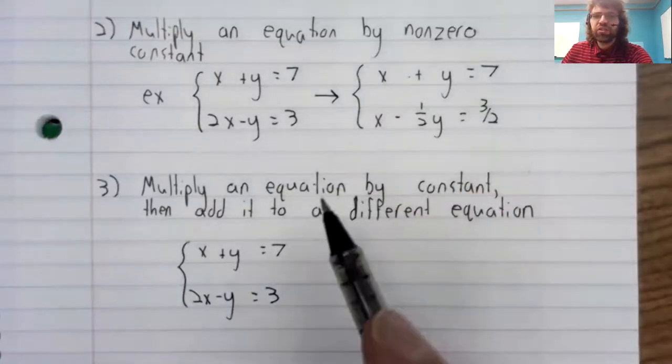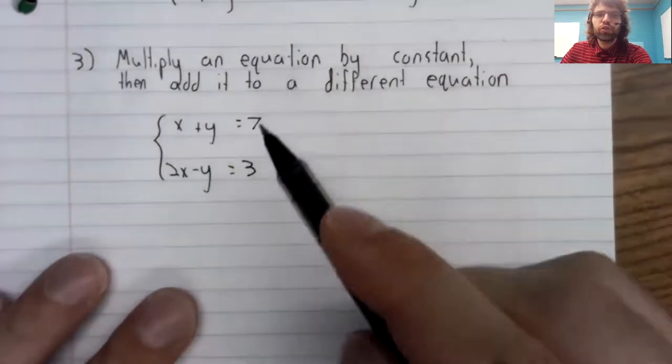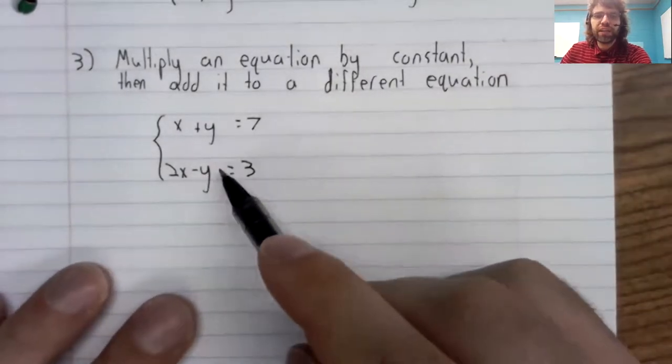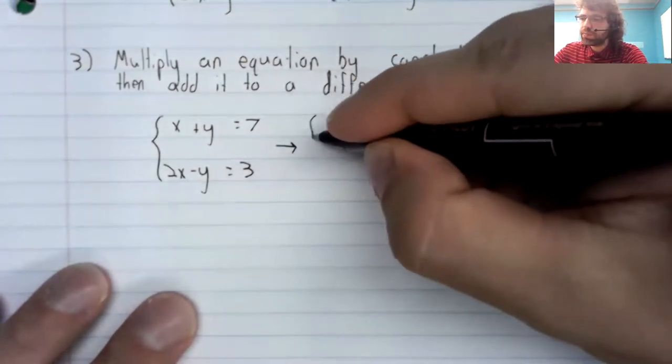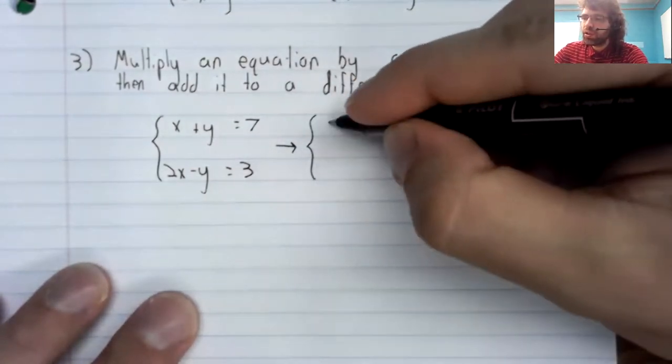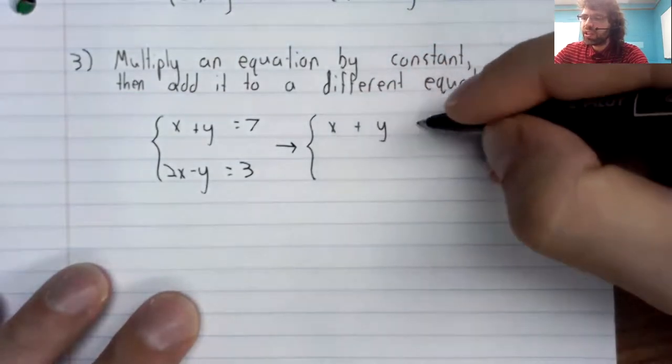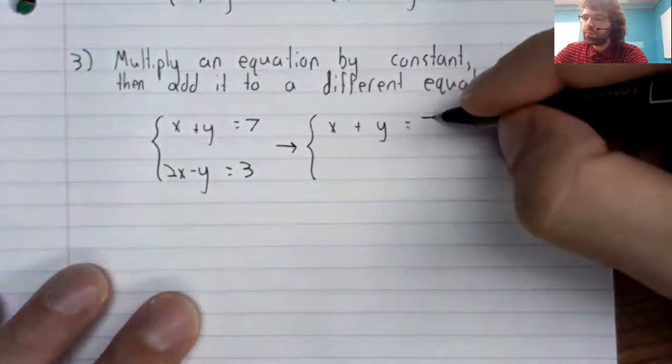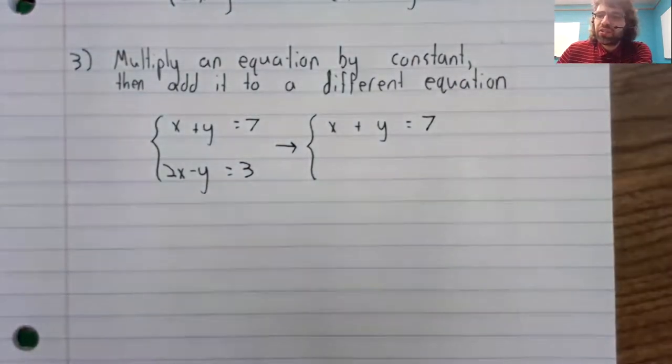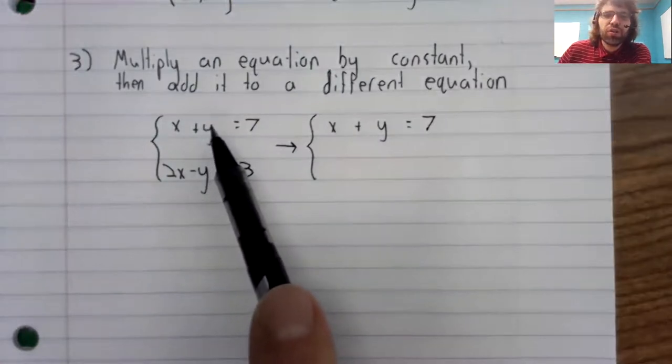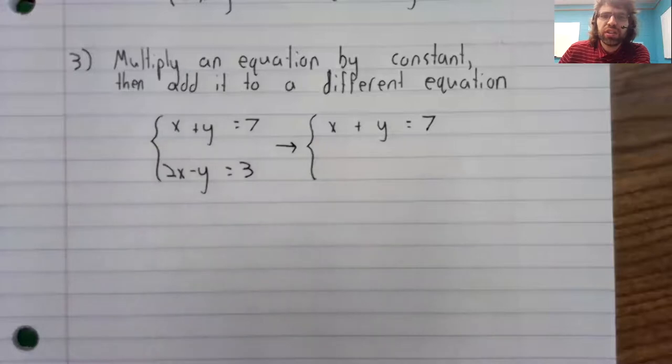Let's use this rule to rewrite the second equation. So the first equation remains the same. What this rule is saying is that you can take the first equation and multiply it by a constant.